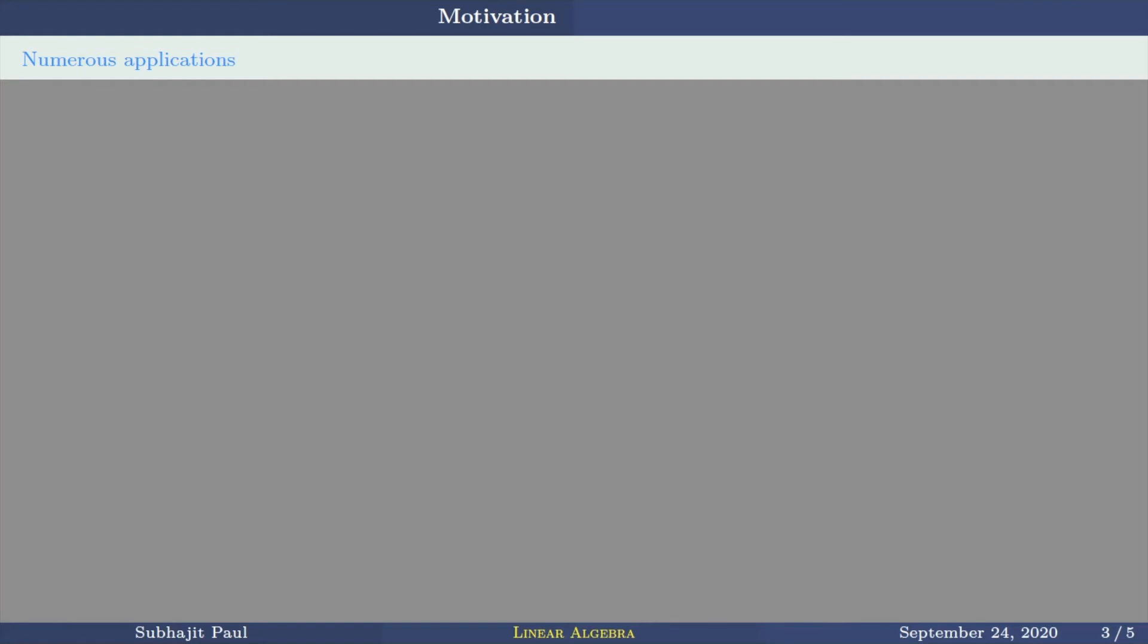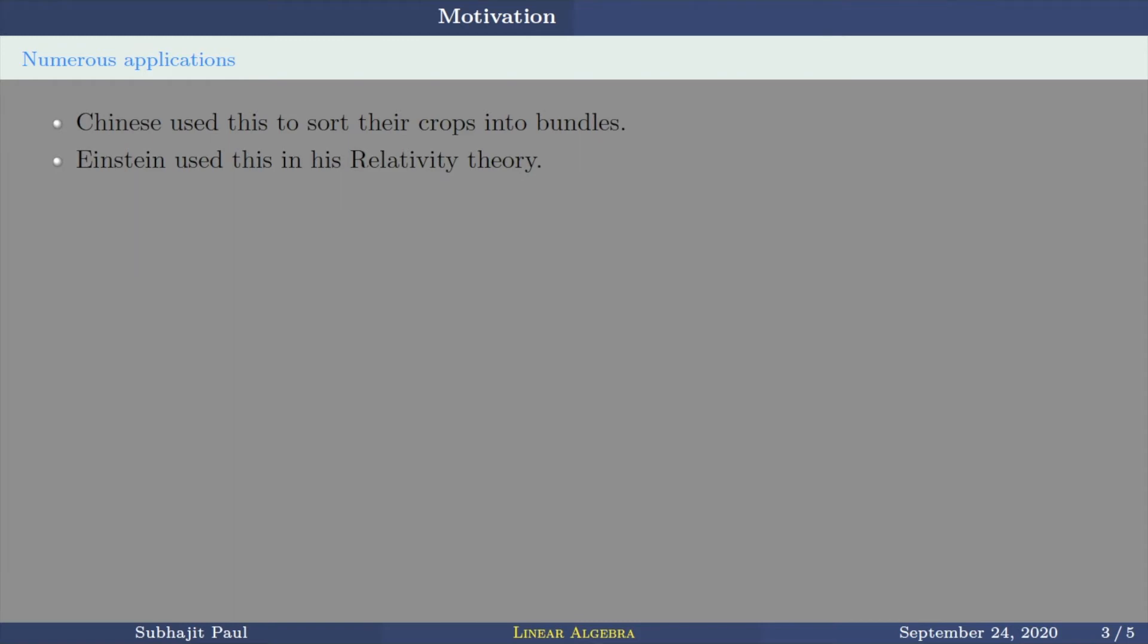Now, numerous applications. This particular subject has been developed through application. Different mathematicians, different scientists have used these techniques from linear algebra, techniques of the same kind in their own problems. Chinese use this one to sort their crops into bundles. Einstein, Albert Einstein used this in his relativity theory. German mathematician Gauss, Carl Friedrich Gauss, used this in his research in astronomy. Actually he discovered a technique for solving system of linear equations which was already discovered by the Chinese in that ancient literature. Of course, Gauss did not know about that. The particular technique of solving this linear equations is today known as Gaussian elimination. So the same technique is used for agricultural crop distribution and in astronomy.